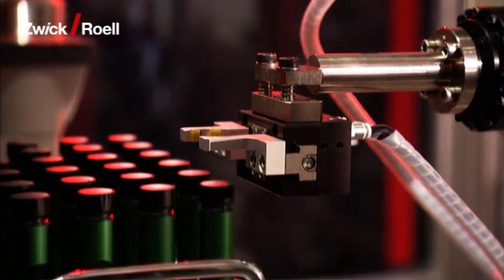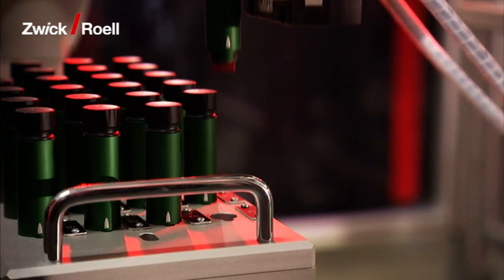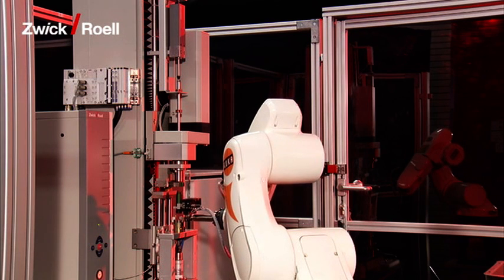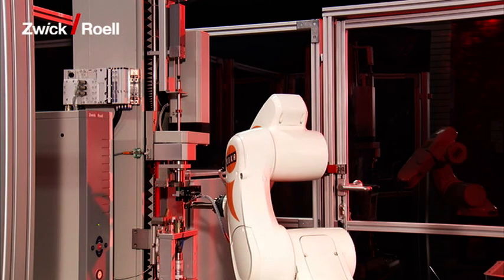The robot extracts the first specimen from the magazine and positions it directly in the test device mounted in the machine.